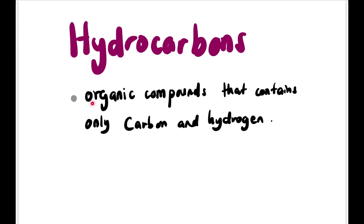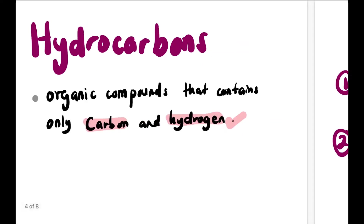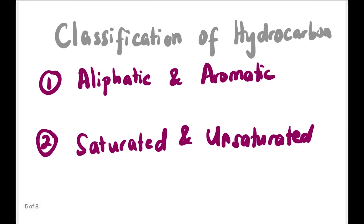Let's start with hydrocarbons. Hydrocarbons are organic compounds that contain only carbon and hydrogen — I repeat, only carbons and hydrogens. Hydrocarbons can be classified into aliphatic and aromatic, and also saturated and unsaturated.